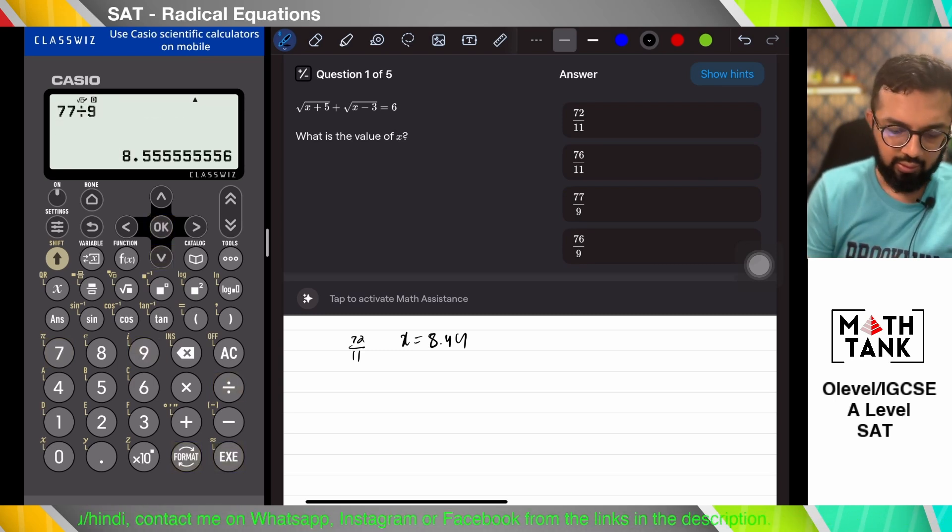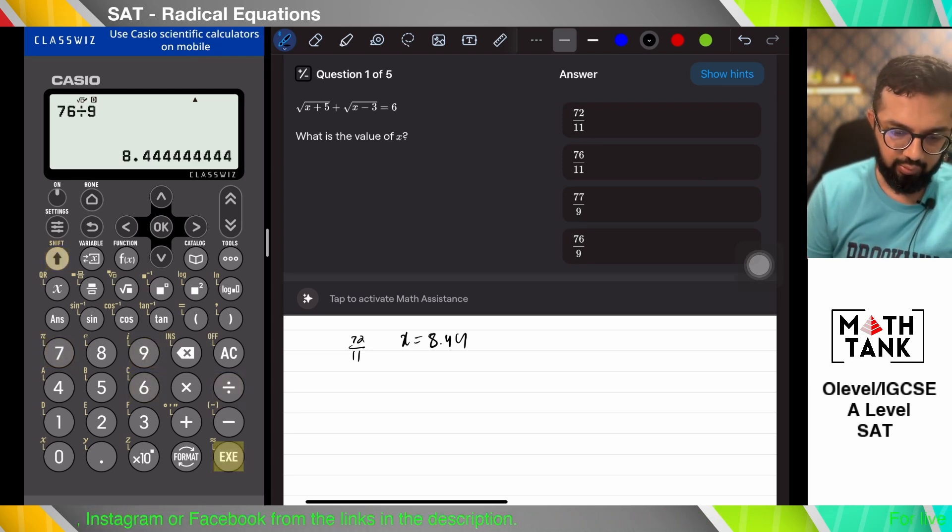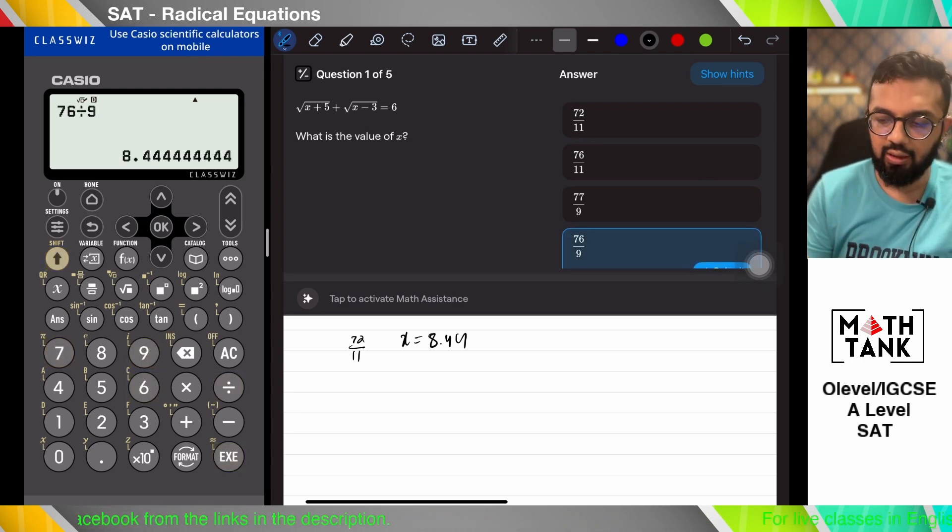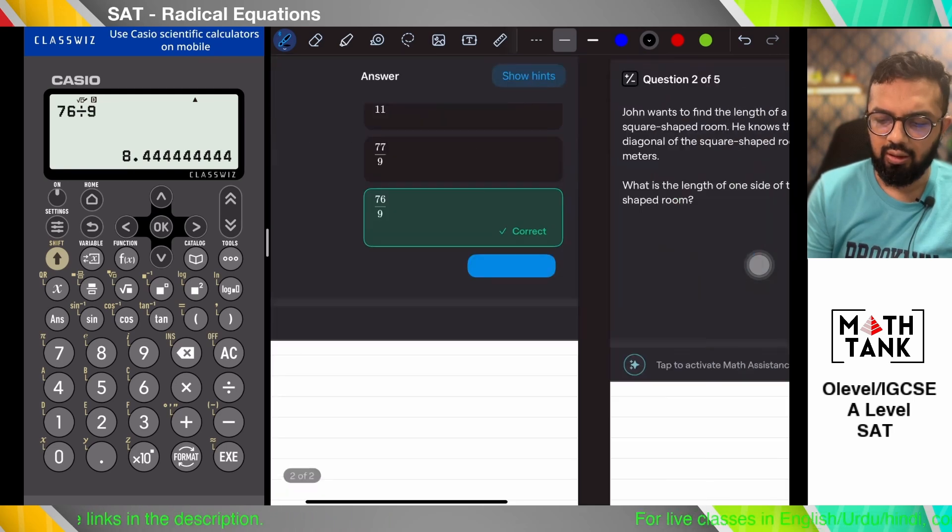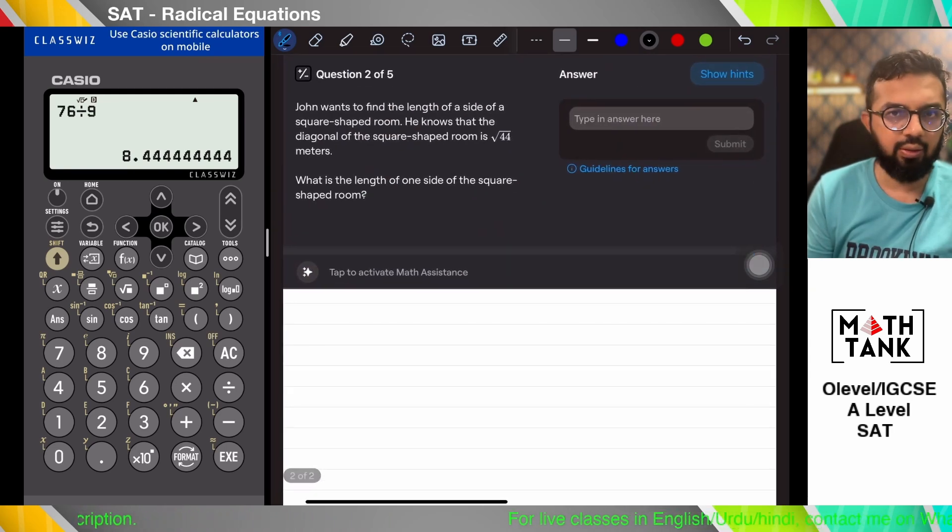I think 77 divided by 9 could be 8.44. No, that's not. 76 divided by 9. Yep, so that's the final answer. So you see using the calculator was easier than doing it manually.